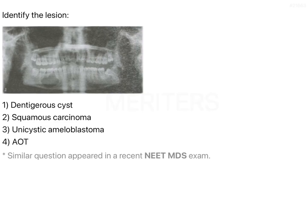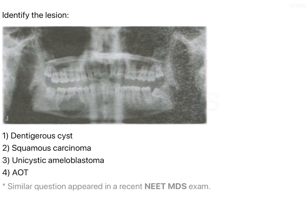The question is to identify the lesion. I am sorry that the image given in the question isn't very clear, but what you would be able to appreciate is, on the right hand side of the mandible, there is a radiolucent lesion appearing as a swelling, and it has caused resorption of the mesial as well as the distal roots of the mandibular first molar.